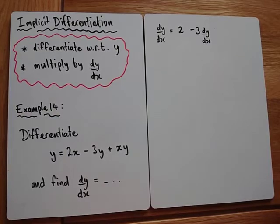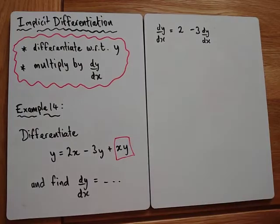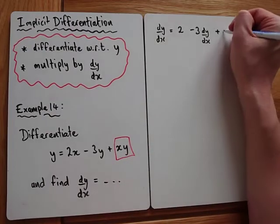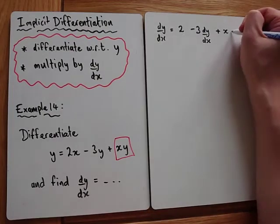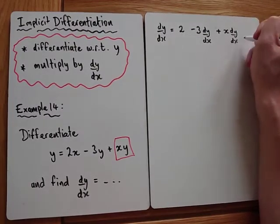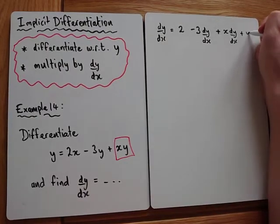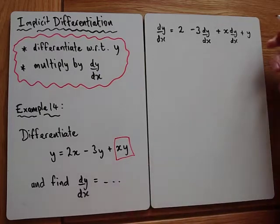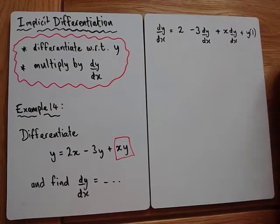The last one, xy. Again, we've got a product of two functions. So if we write it as u, that would be x, times by the derivative of this, which would be dy/dx, plus v, which would be y, times by the derivative of u. And if you differentiate x, you get 1. So that's just going to be y times 1, which is clearly just y.